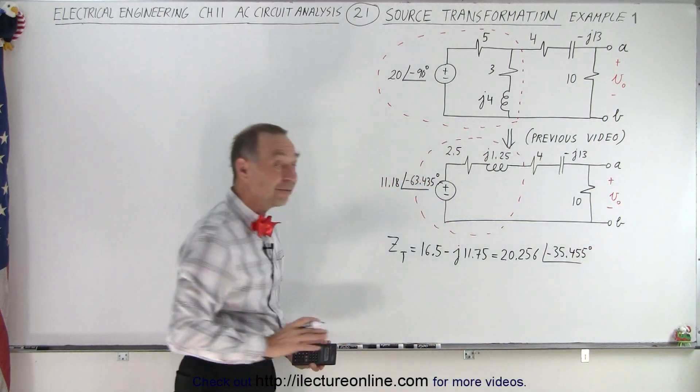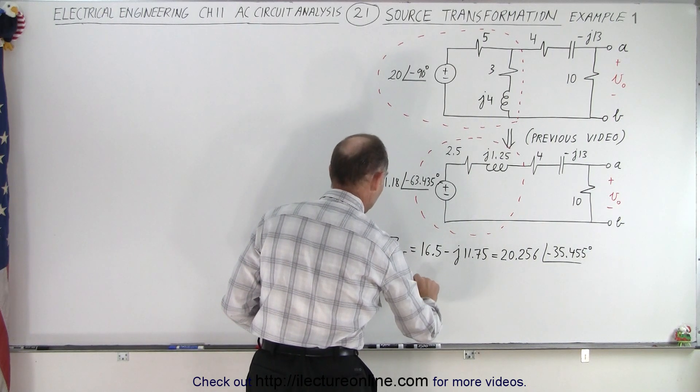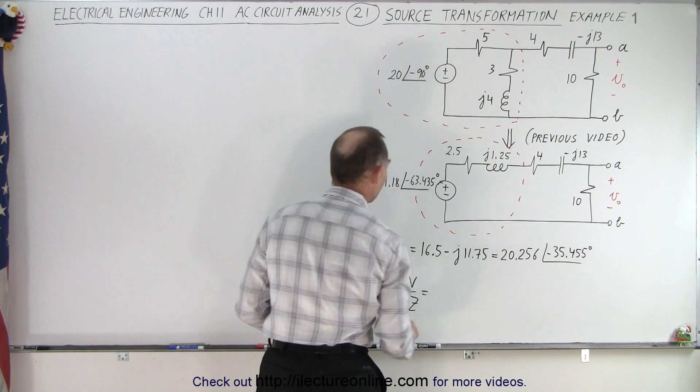Okay, now that I have the impedance, now we can find the current to the circuit. The current I is going to be V over the impedance. So, in this case...